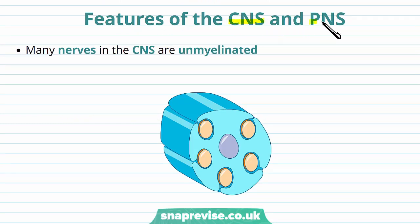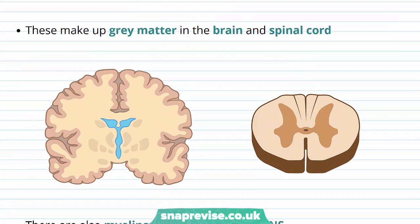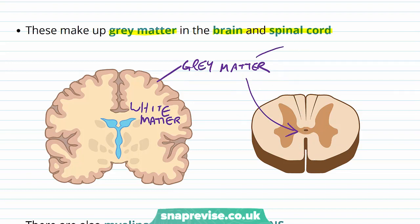There are different features found in the CNS and the PNS which define them into their two separate areas. A lot of nerves in the CNS are unmyelinated. Myelination refers to Schwann cells wrapping their membranes and lipids around the cells, but in the CNS the neurons are unmyelinated — the Schwann cells are still present, but without this wrapping of membranes. These unmyelinated neurons make up the grey matter, found in the brain and the spinal cord. In the brain we can see two colours of region: white matter and grey matter. The grey matter in the brain lies on the outside, but in the spinal cord it lies on the inside.